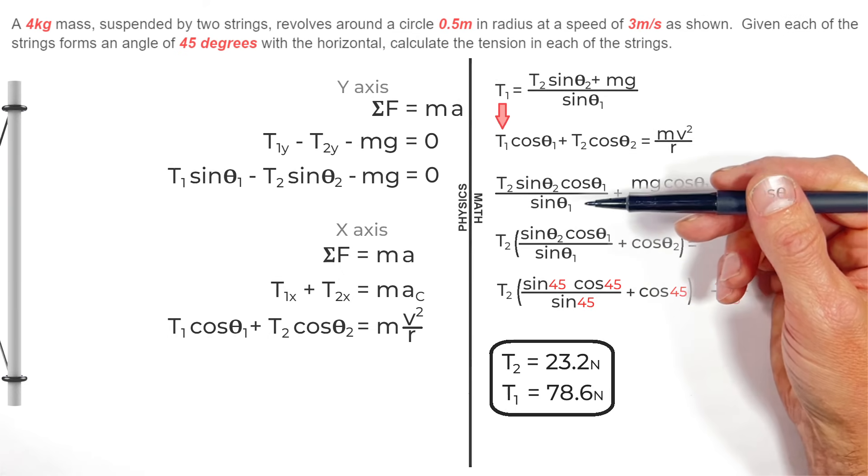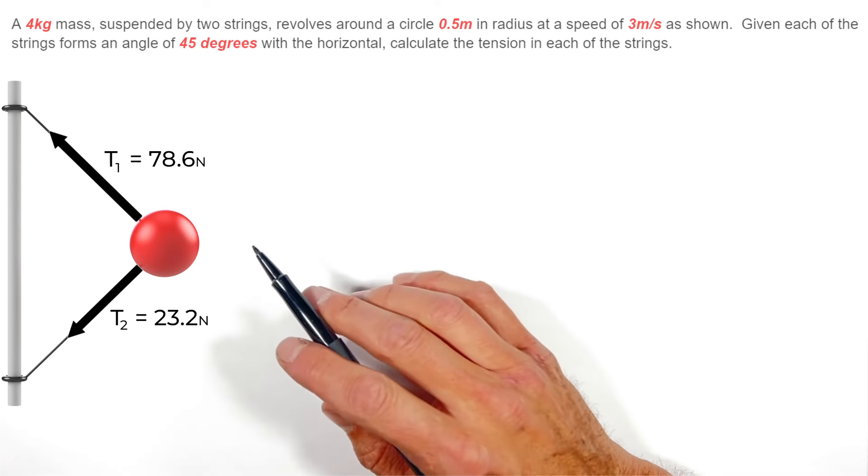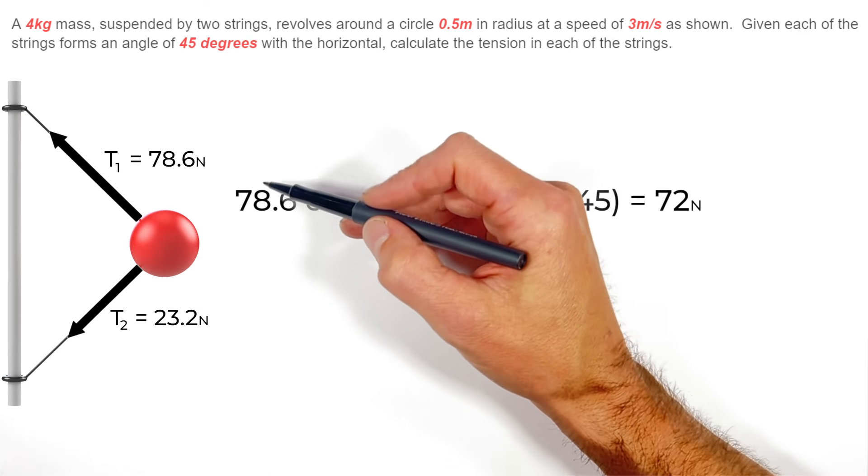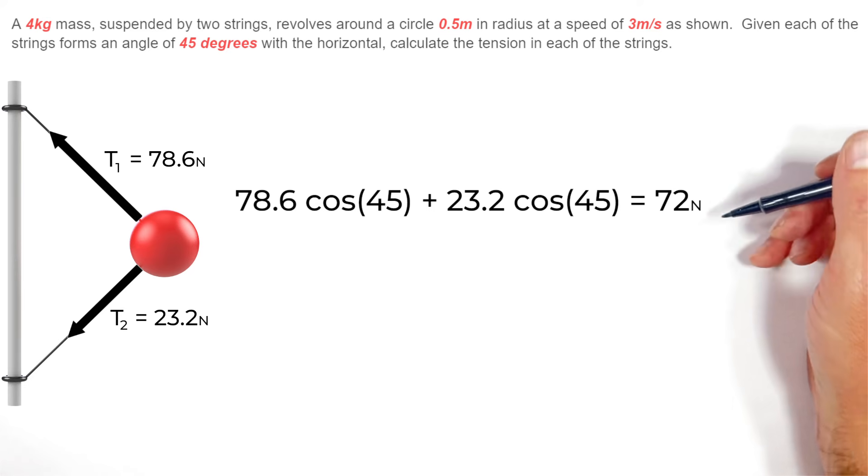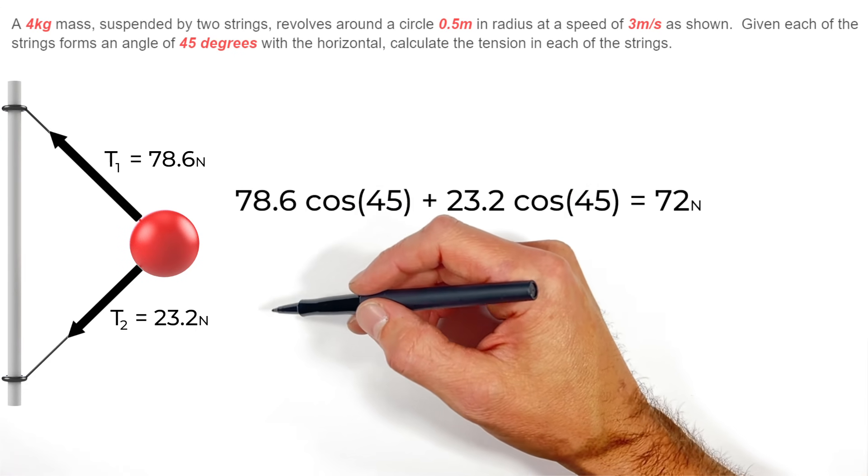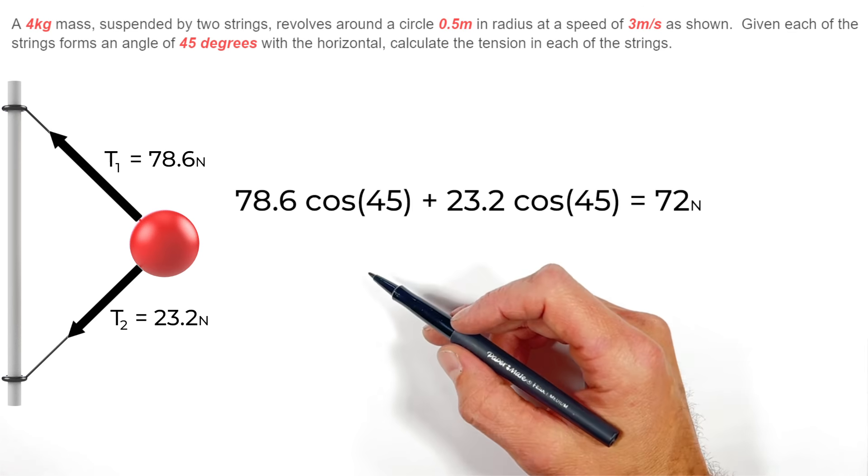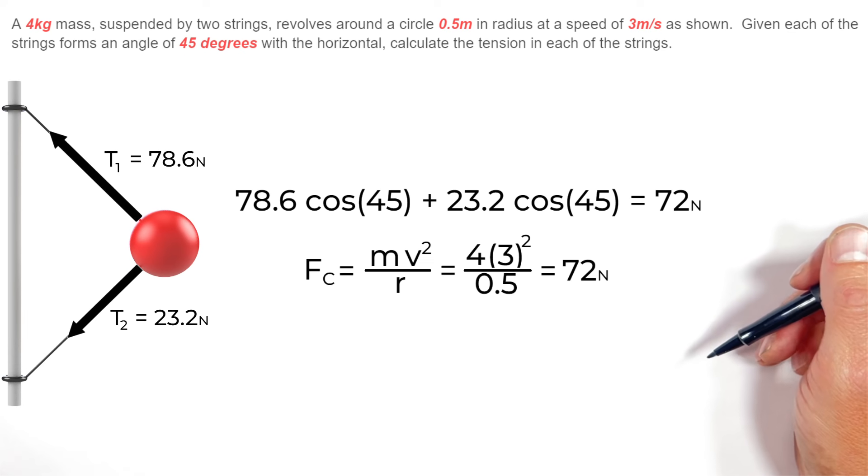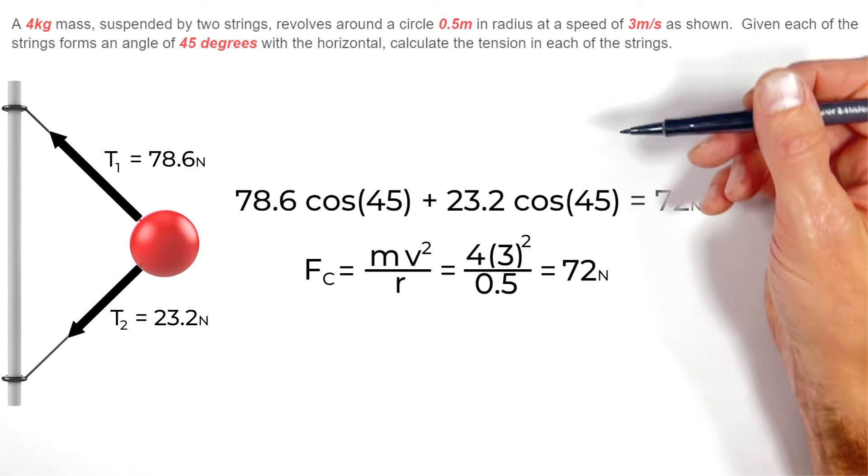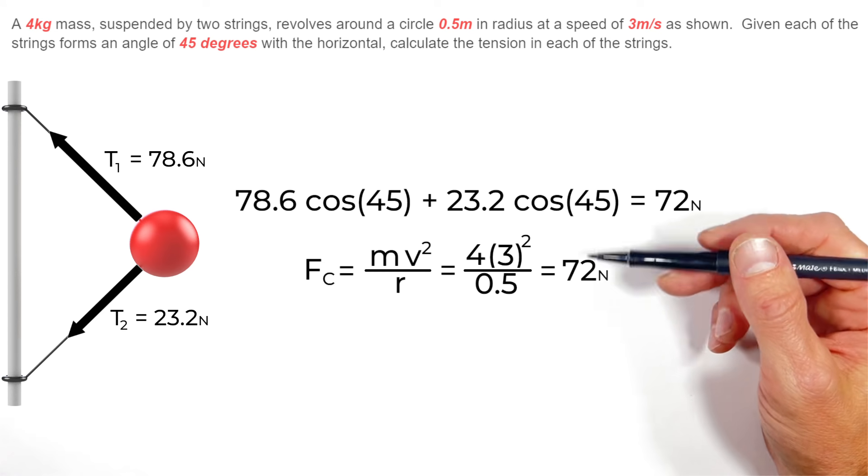But don't worry, there's a way to check this problem. You see, once we've determined the tension in these two strings, there's a way to go back through and look at what's going on here so that we're sure our solution is correct. You see, knowing the magnitude of these two tensions, if we combine the horizontal components of each of those two tensions, we find that there's 72 newtons of force acting centripetally on this ball. Now if our two tensions that we calculated are correct, those two tensions should actually equal the total centripetal force on the ball, centripetal force being mv squared over r. If you plug in the numbers from the problem you'll see we in fact get the centripetal force is 72 newtons. Our horizontal components equal the centripetal force. That's really what we came up with in the x-axis earlier. So ultimately this problem checks out.